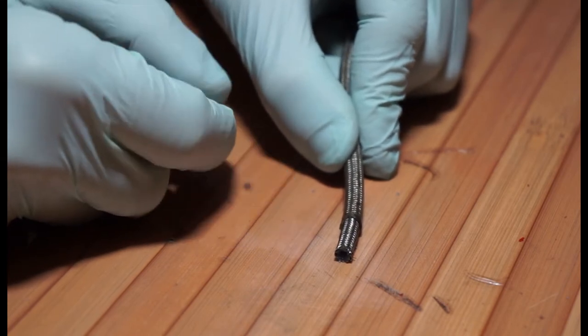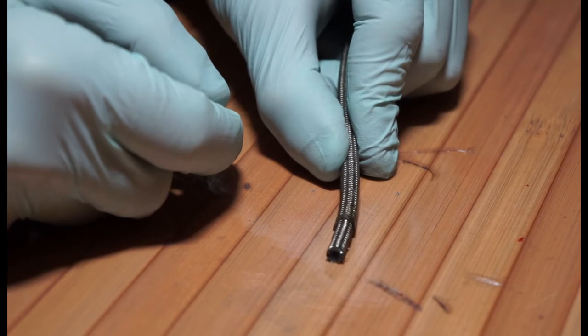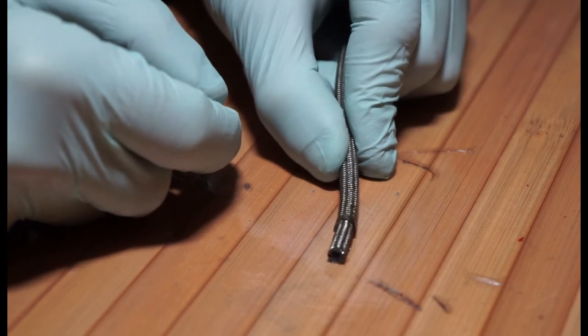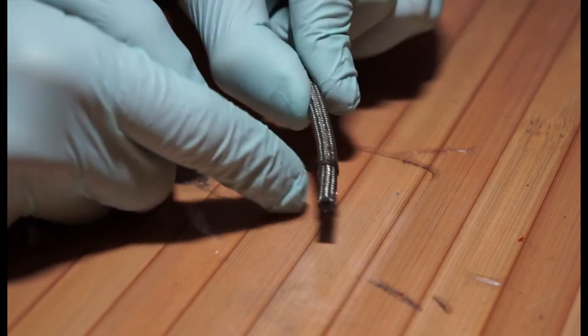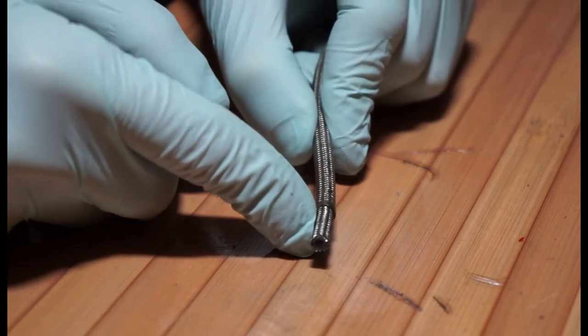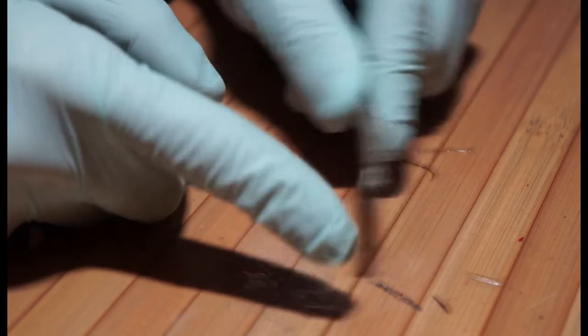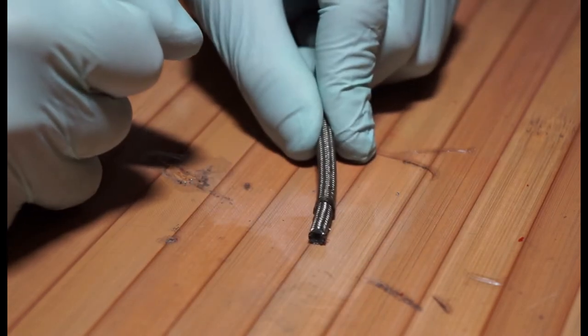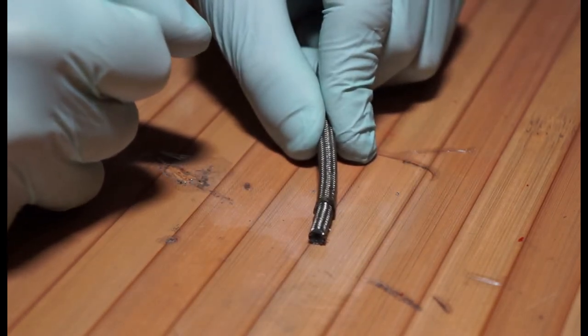All the hoses are pretty much compatible with all the brakes, so you could run a 6 millimeter hose on a brand new set of Tech 3 V4s or something like that. We're going to move on to the connectors for different hoses now.